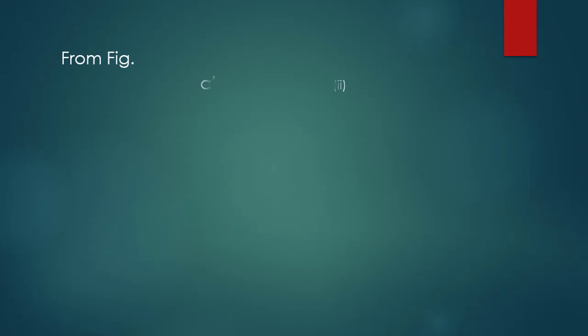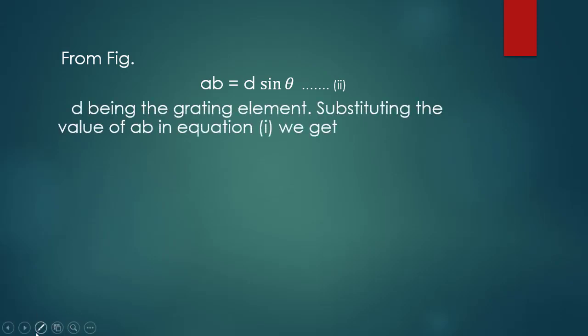From the figure, AB is equal to D sin theta. Since sin theta equals perpendicular over hypotenuse, the perpendicular is AB and the hypotenuse is the grating element D. Therefore AB equals D sin theta. Substituting the value of AB into the equation, we get D sin theta equals lambda — equation number 3.